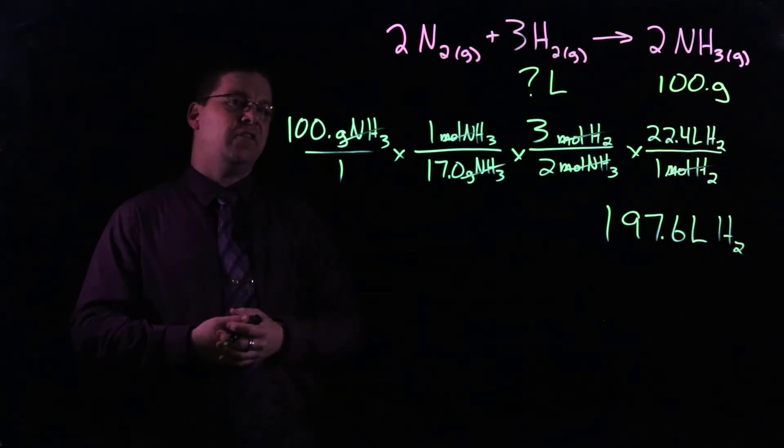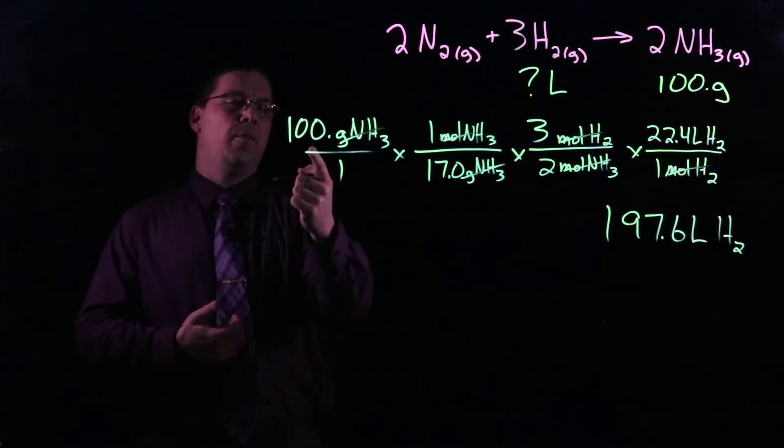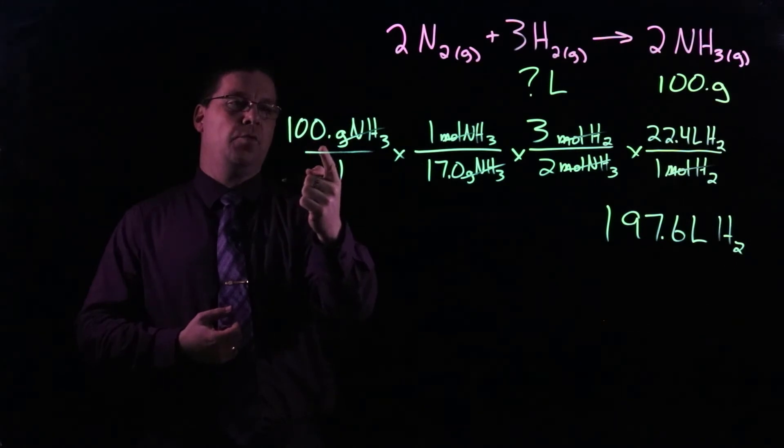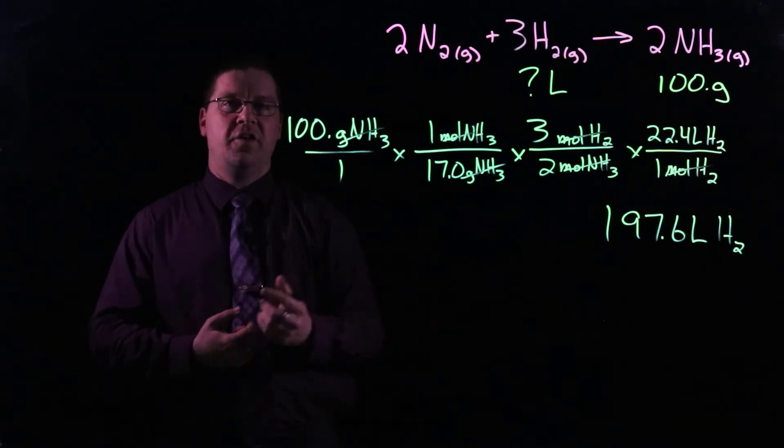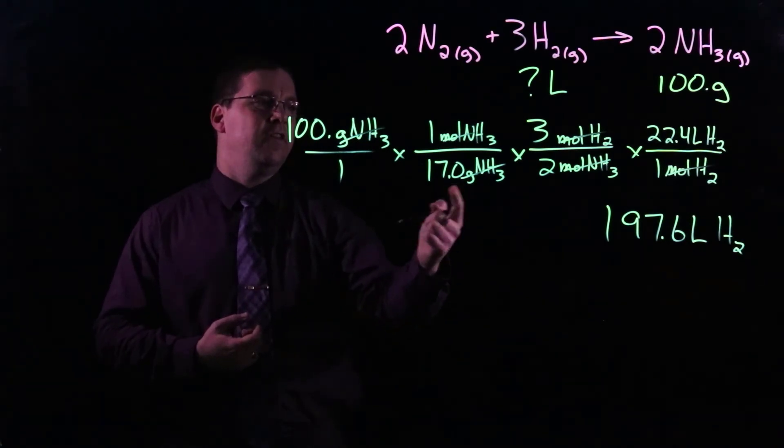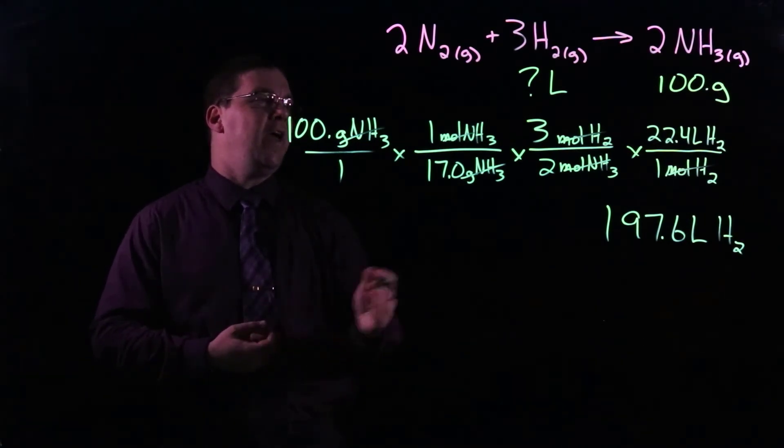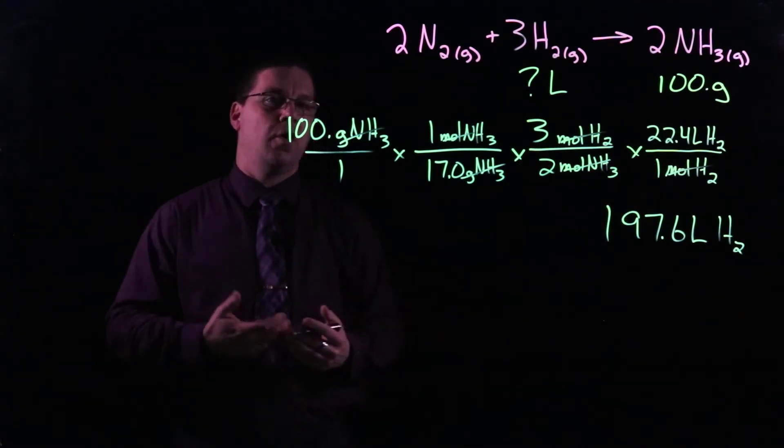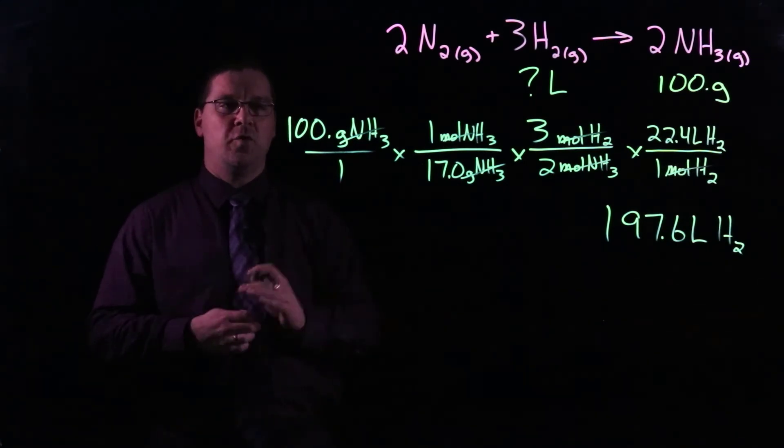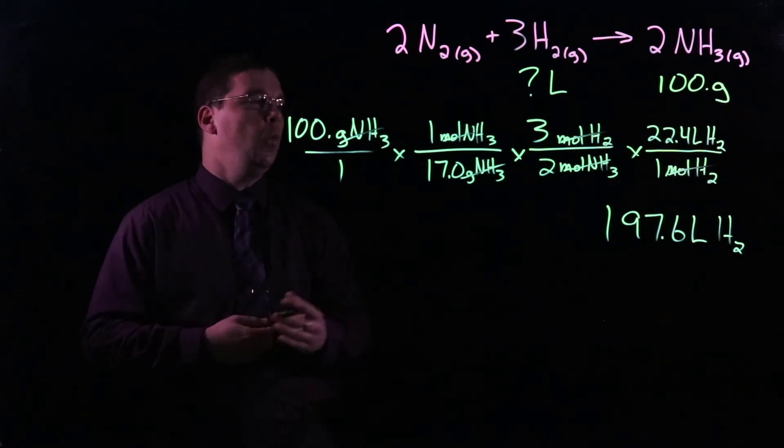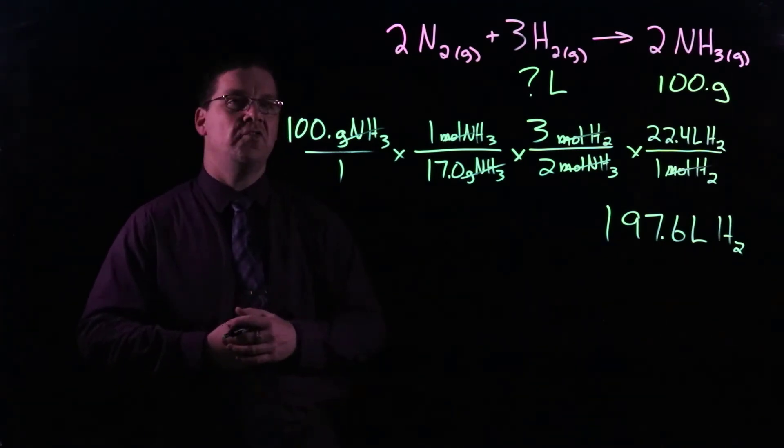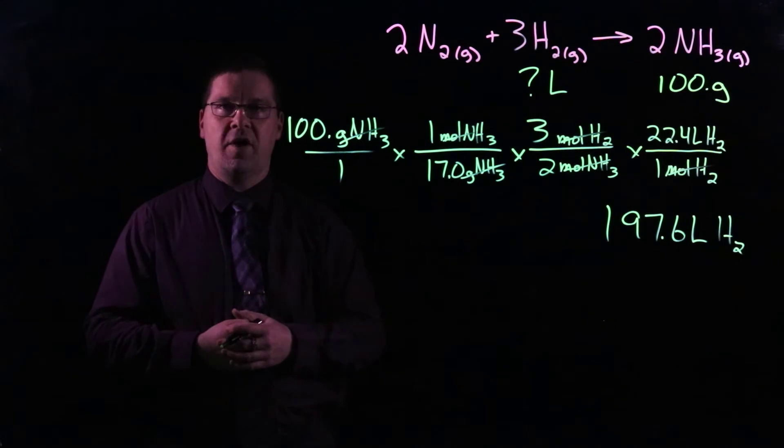Again, looking at significant figures, we always consider the initial value, the measured value we're given, that has three significant figures. The molar masses we want to consider as well. So we've got three in the 17.0. And the rest of the values that we have here are considered exact values, so we're not going to consider them. So our final answer should be reported with three significant figures, which would make our final answer 198 liters of hydrogen.